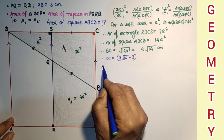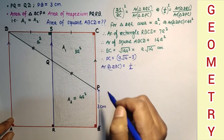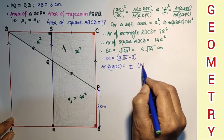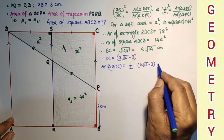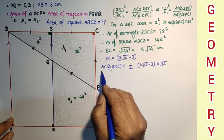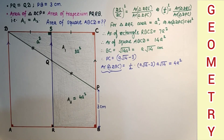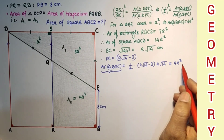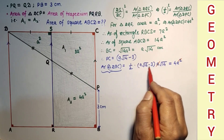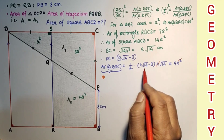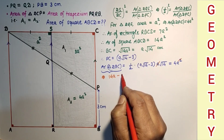The area of triangle DPC is equal to one half into base PC and height DC. PC is A root 14 minus 3, and DC is A root 14. We know this trapezium area equals 3A squared, and the triangle area is 4A squared. After simplification, root 14 into root 14 gives 14A, minus 3 root 14, which equals 6A. So 6A is equal to 3 root 14.